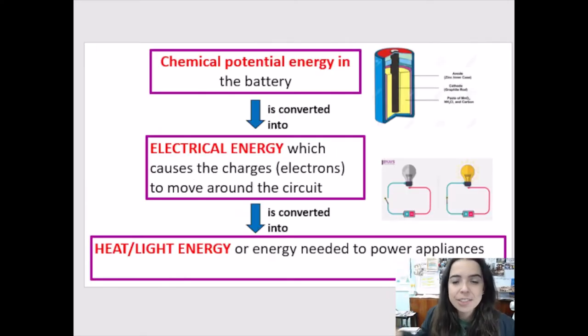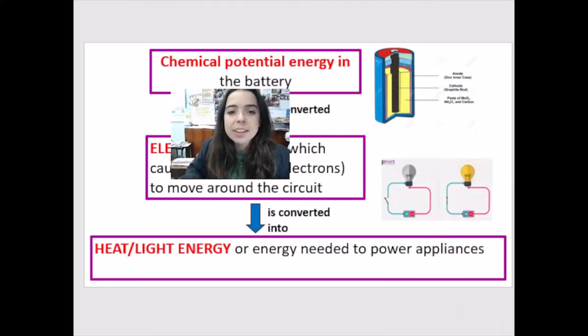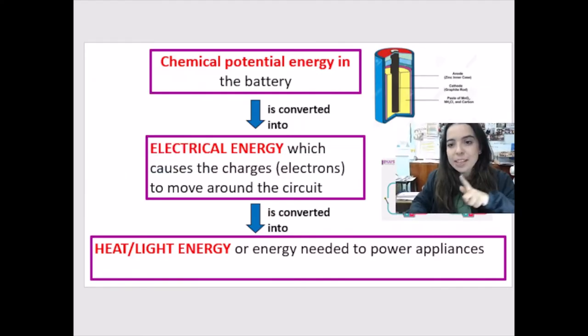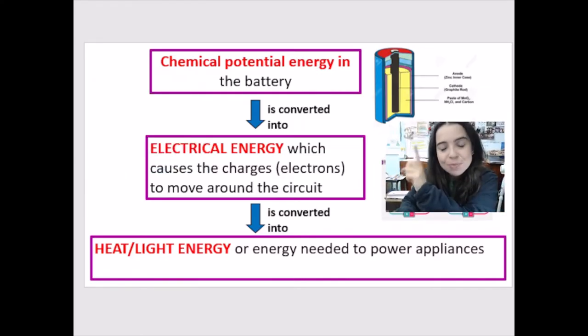The energy changes that take place within an electric circuit. It's very, very important for you to understand. So I've drawn a flow diagram for you. Let's start at the top. We've got the chemical potential energy in the battery. So over here, I put a battery for you. Yes, that's what a battery looks like.